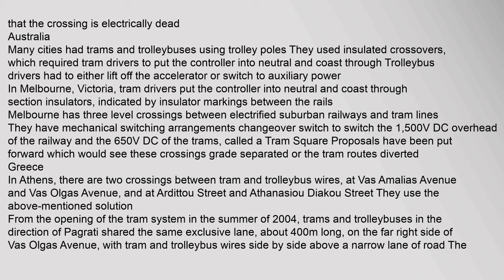In Australia, many cities had trams and trolleybuses using trolley poles with insulated crossovers, requiring tram drivers to put the controller into neutral and coast through, while trolleybus drivers lifted off the accelerator or switched to auxiliary power. In Melbourne, Victoria, tram drivers coast through section insulators indicated by insulator markings between the rails. Melbourne has three level crossings between electrified suburban railways and tram lines, using mechanical switching arrangements to switch between 1,500 volts DC overhead railway and 650 volts DC tram power, called a tram square.